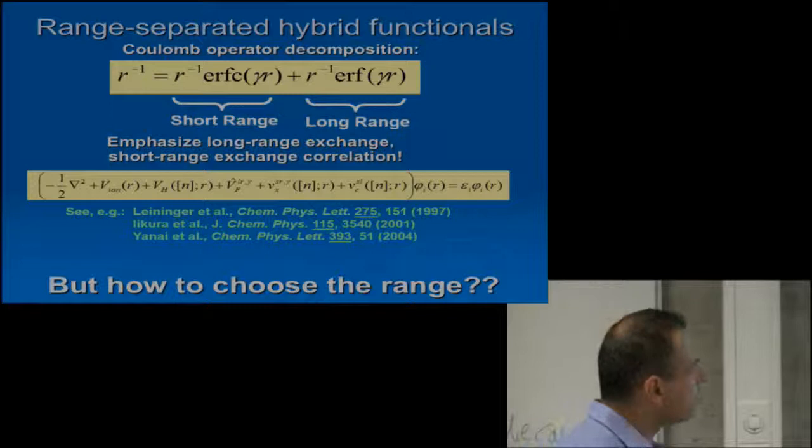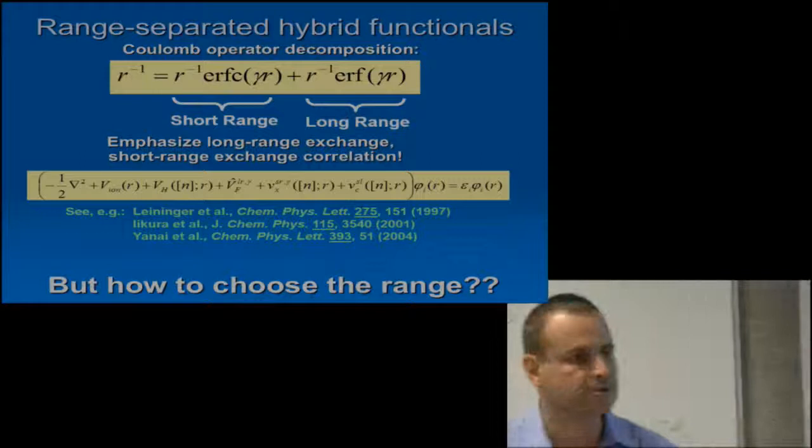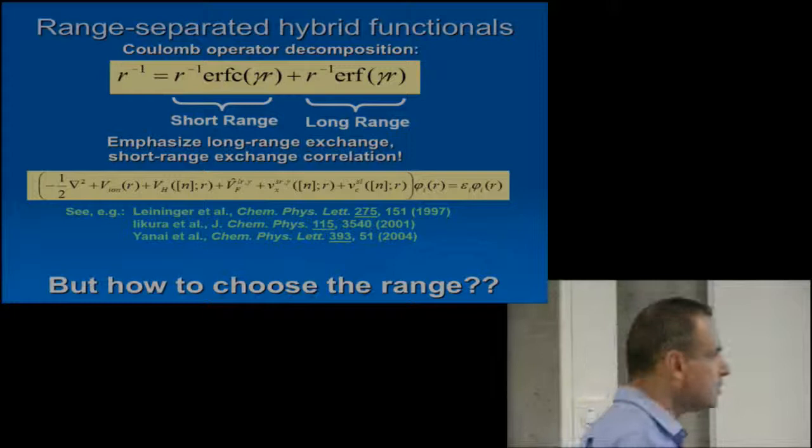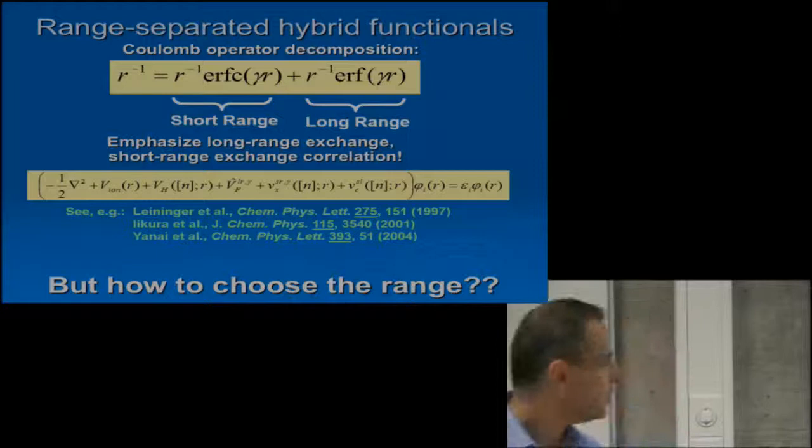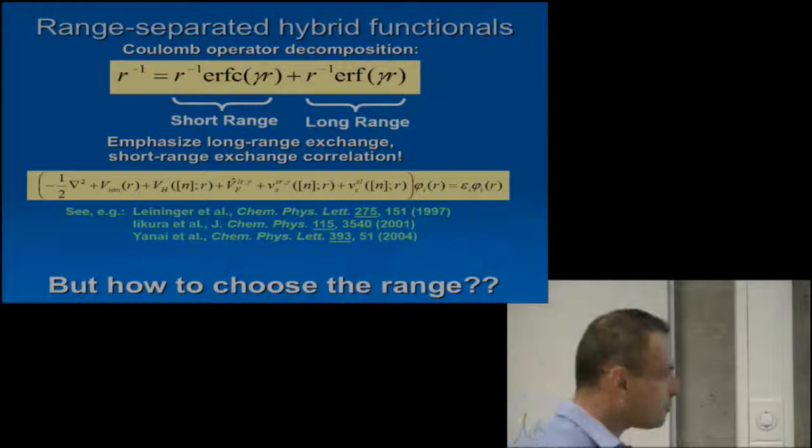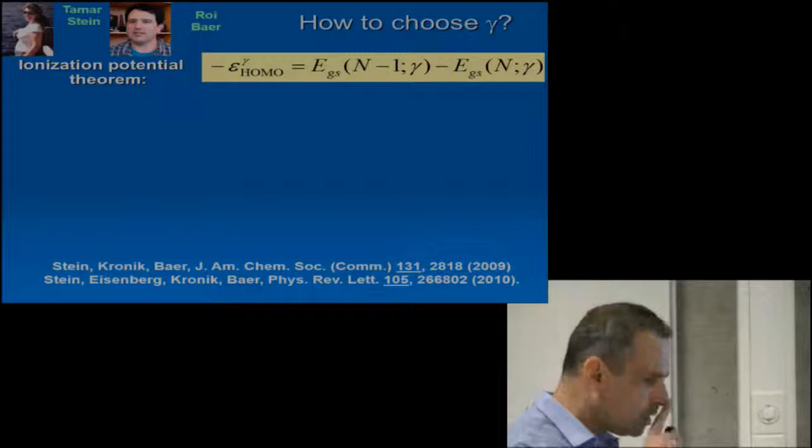Now, there's one point here that I haven't discussed so far. How do I choose the range separation, or in other words, what's this gamma parameter here, which really sort of sets where I would be transitioning from a long-range behavior to a short-range behavior? There are two ways to go about it. One is the semi-empirical or the fitting approach. We wanted to do something else for two reasons: because we wanted to keep it first principles, and for another reason I'll touch upon a little later.